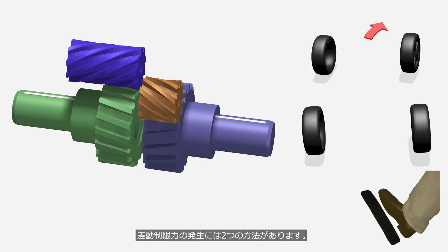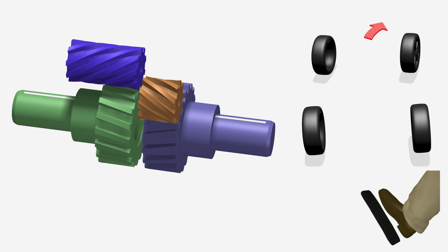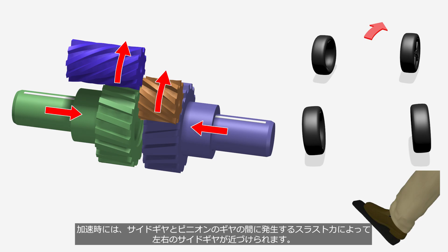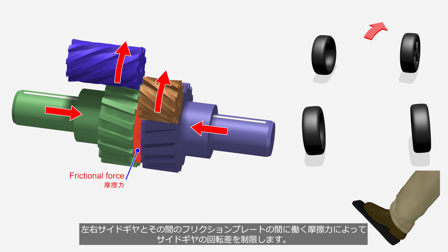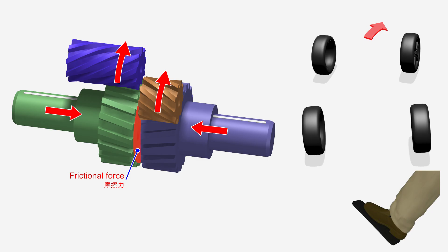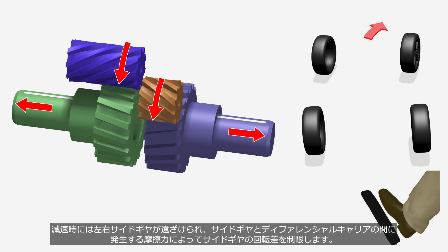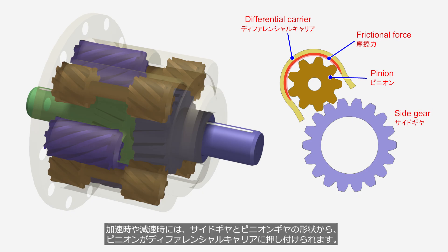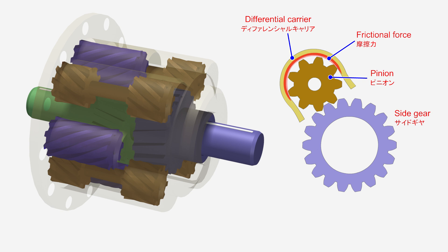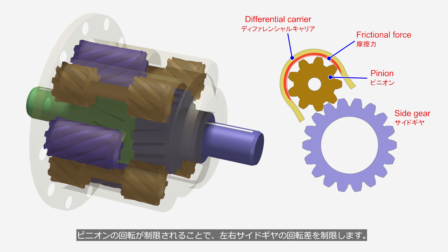There are two methods to generate differential limiting force in the helical gear type. The first utilizes frictional force on the side gears: during acceleration, thrust force between the side gears and pinions brings the side gears closer together, and frictional force between friction plates and both side gears restricts the rotational difference; during deceleration, the side gears separate and generate friction between the side gears and the differential carrier. The second method utilizes friction between the differential carrier and pinions: during both acceleration and deceleration, the shapes of the side gears and pinion gears cause the pinions to press against the differential carrier, generating frictional force that restricts pinion rotation and thus restricts the rotational difference.